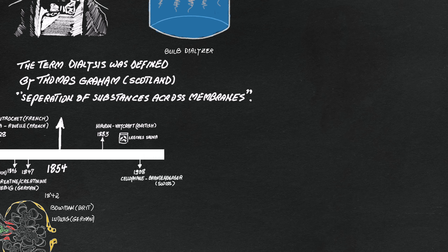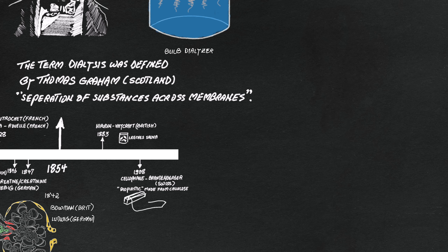In 1908, a Swiss Brandenburger discovered cellophane, made from cellulose used for food packaging at the time. It was the plastic equivalent in those days, which will play a big role with Dr. Kolff a few decades later.